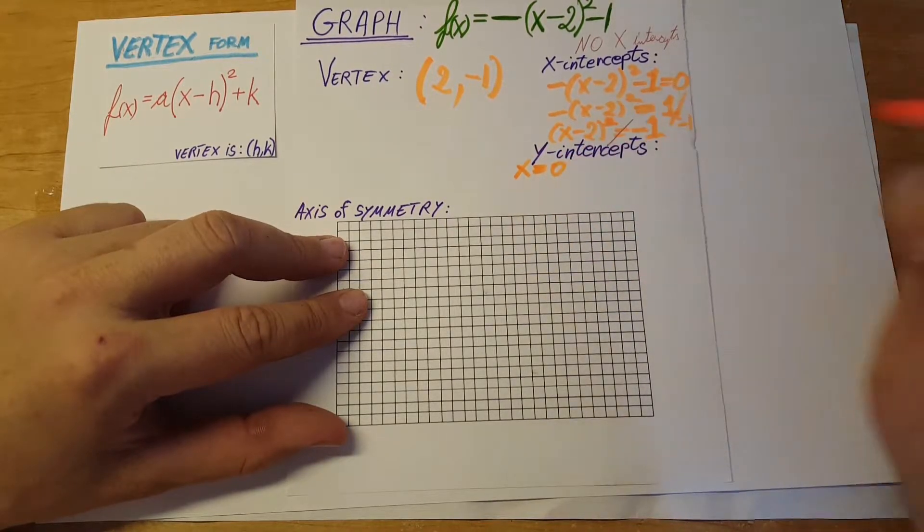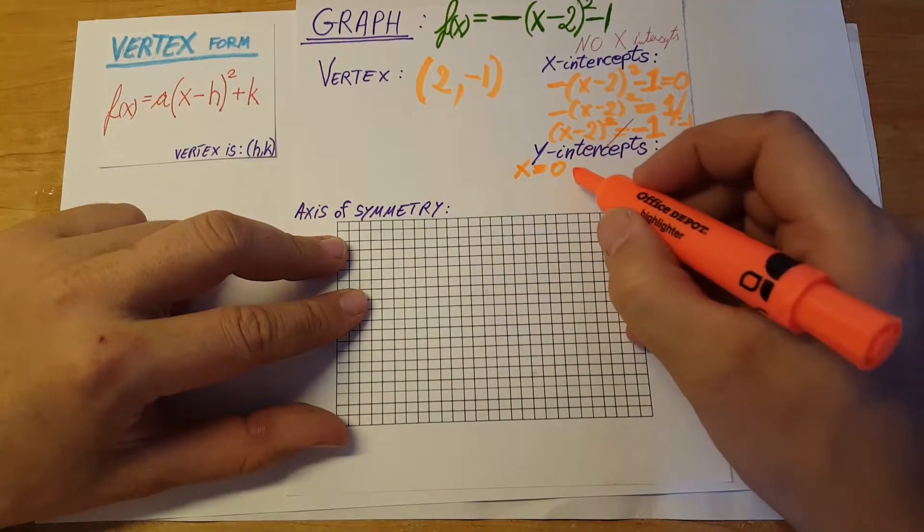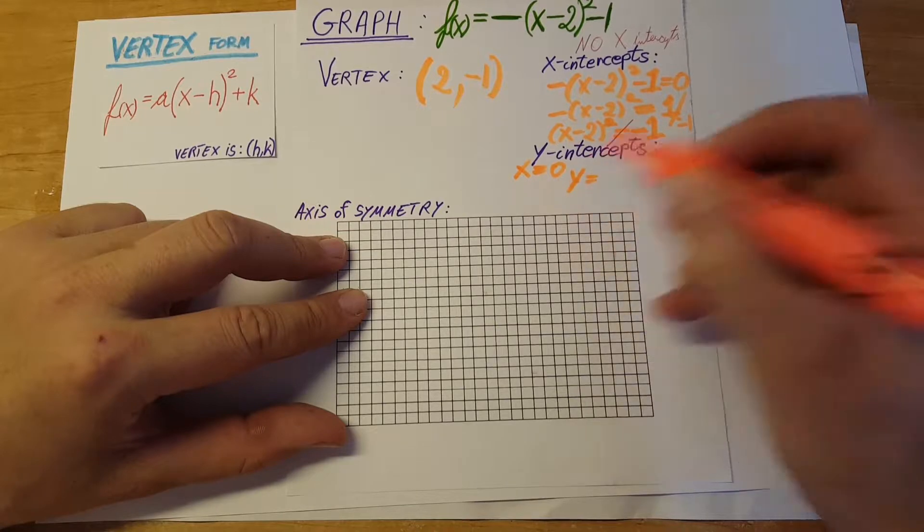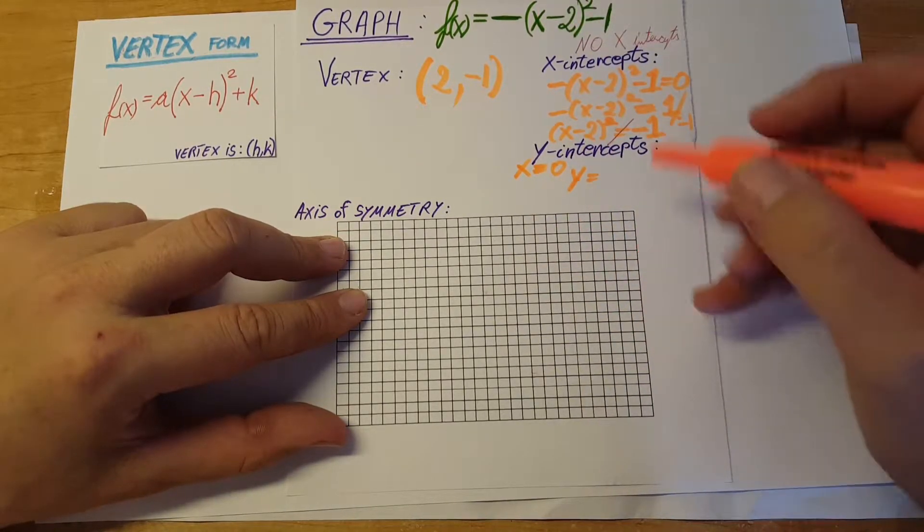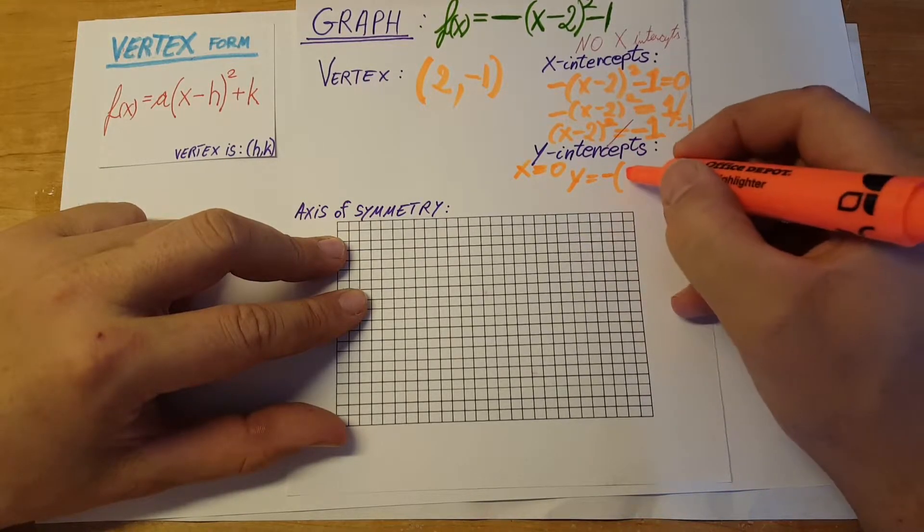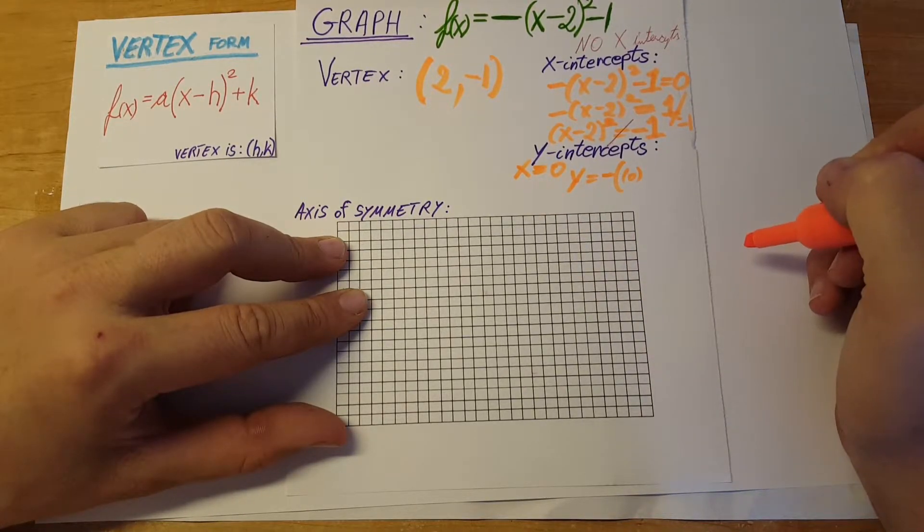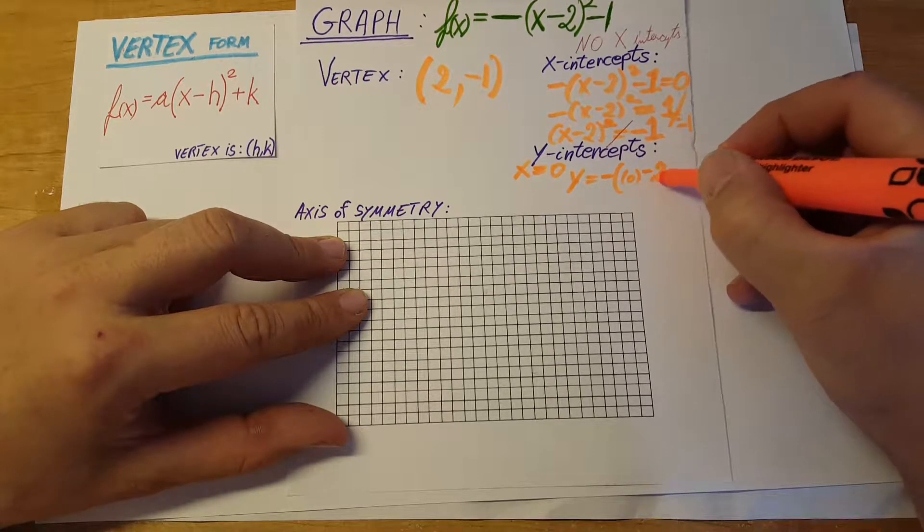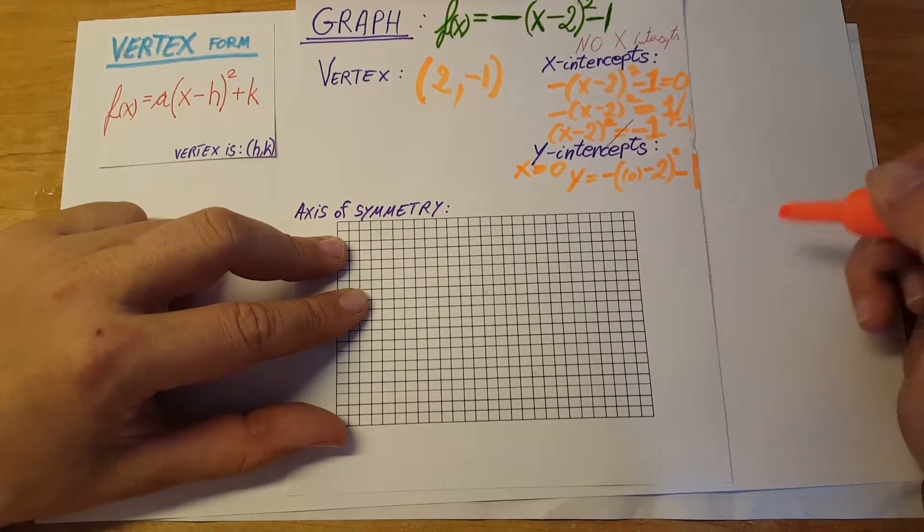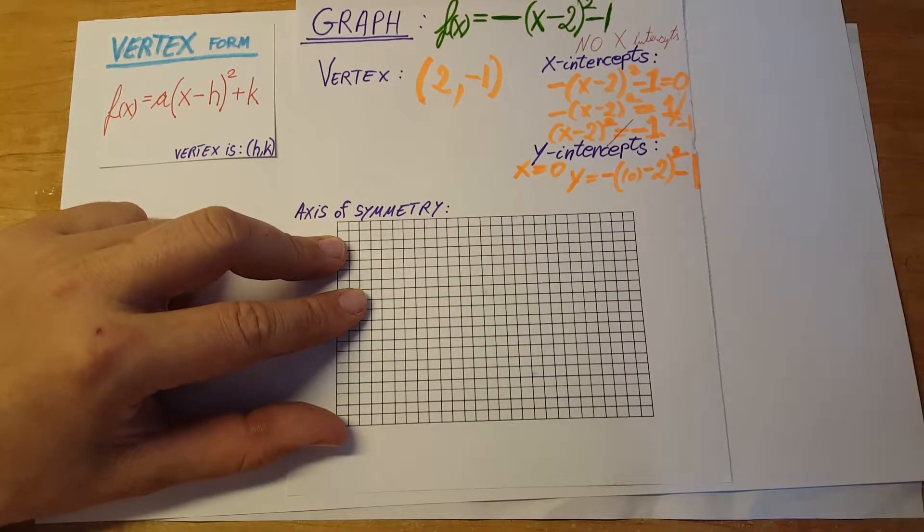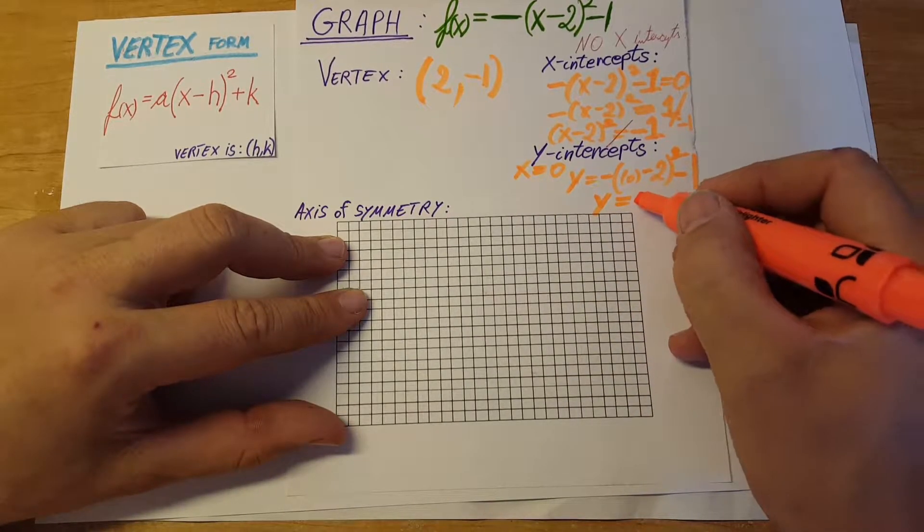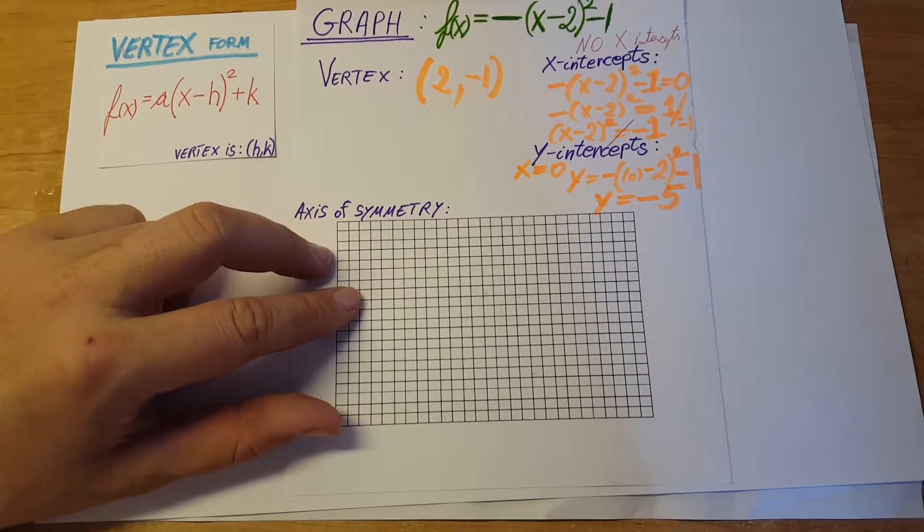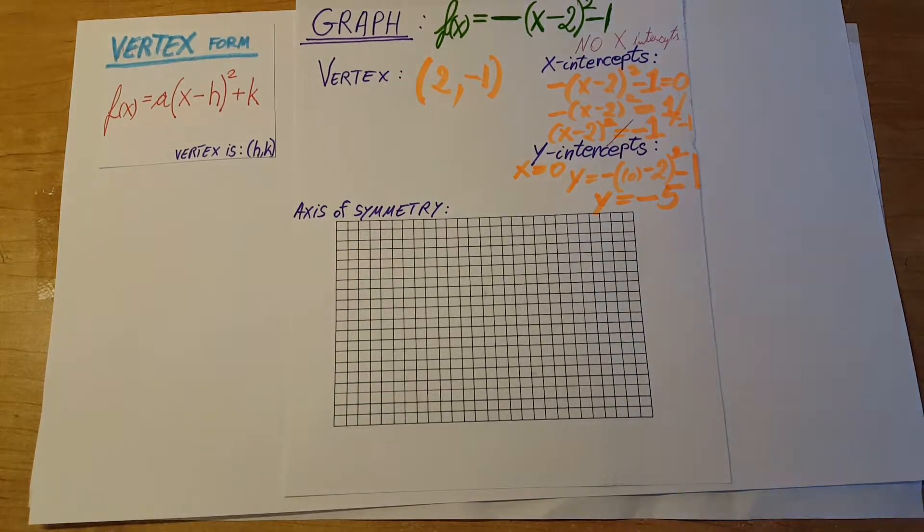For that, we're going to take x = 0. So y equals – we'll plug in our x value: -(0 - 2)² - 1. If we solve this, we get y = -5.